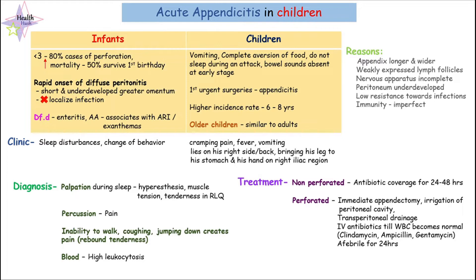The appendix is longer and wider comparatively to adults, and also the appendix is weakly expressed with lymph follicles, which makes their immunity imperfect and incomplete. Their nervous apparatus is also incomplete, and the peritoneum in children is underdeveloped. Because of all these reasons, they have low resistance towards any infection.